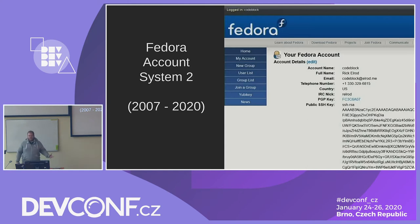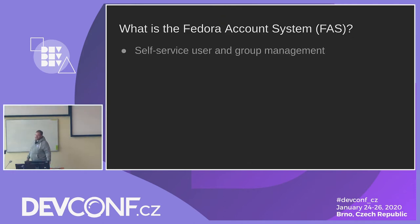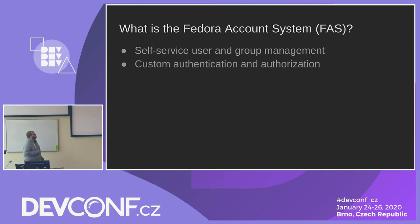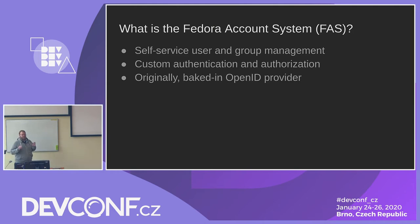We have over 30 web applications and a lot of these tie into the auth system — the wiki, build frontends, all sorts of various web applications. This is our current account system. If you have interacted with Fedora at all, you've seen a page like this. This is what we've been using since around 2007, and this is the system we're currently trying to move away from.